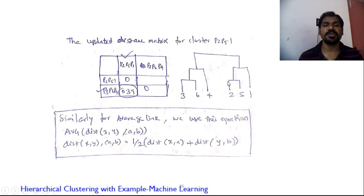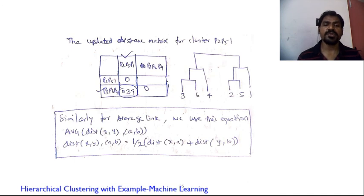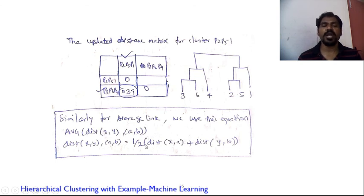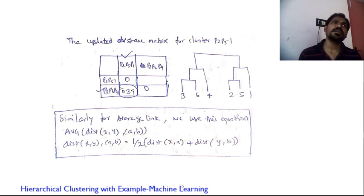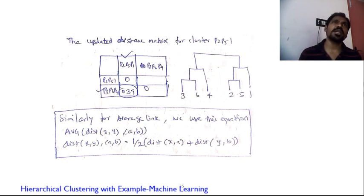Similarly, for average link — the third representation — compute distance between two data points and add the two distances divided by 2 to get the average. Use those average values to update the distance matrix. Then look for the minimum, merge, repeat until you find the final complete cluster.